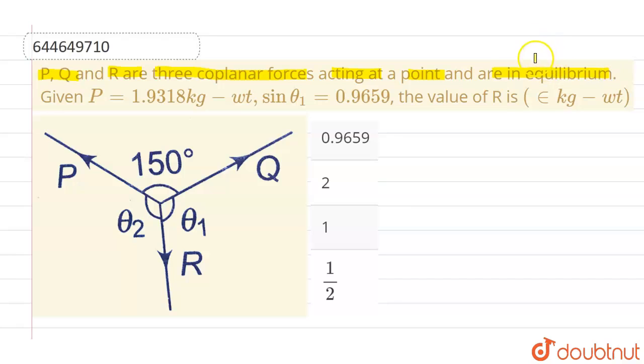Now this word equilibrium implies that the vector summation of P, Q, and R vector is equals to null vector. Now we are also given that P is equals to 1.9318 kg weight and sin θ1 is nothing but 0.9659. We have to find out the value of R in unit kg weight. Okay, and these are the given options.